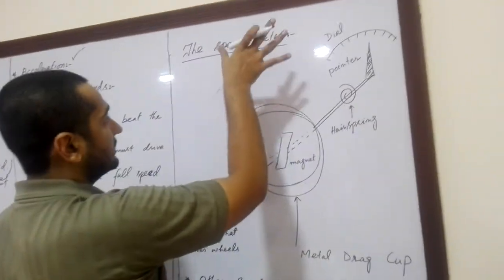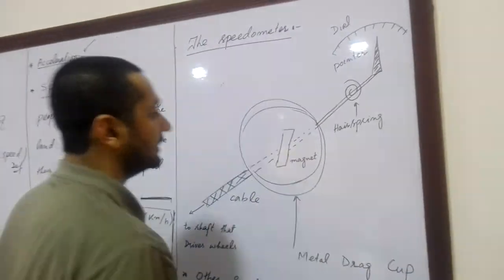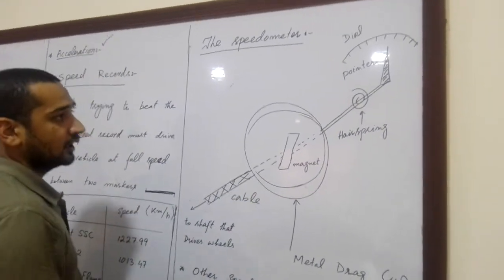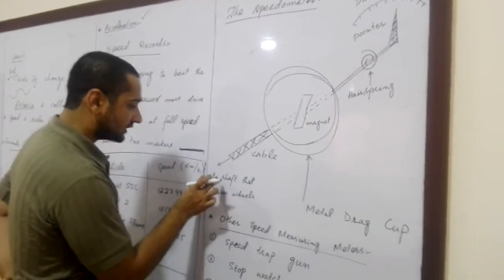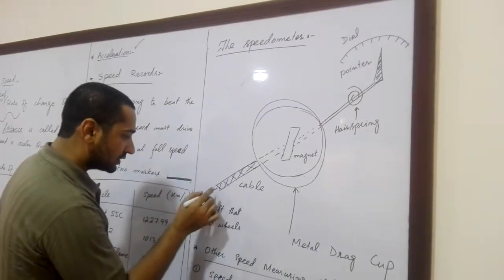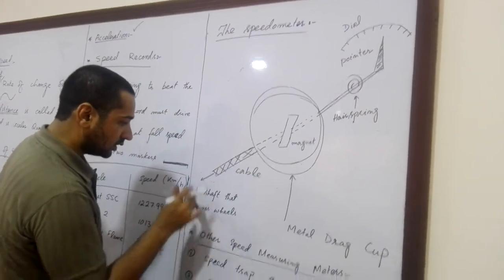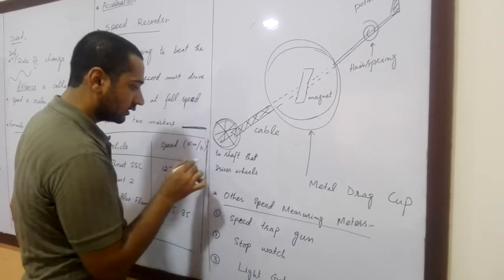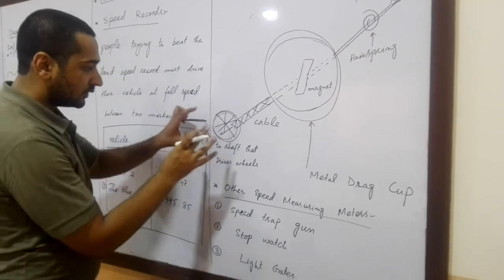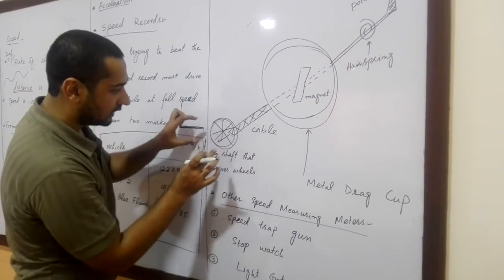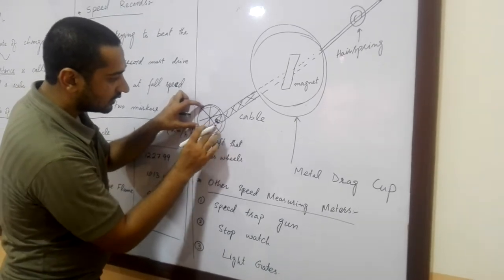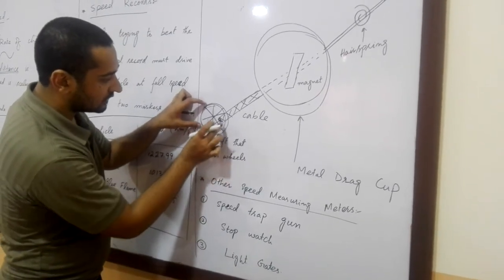Now I am going to discuss the speedometer. Basically the speedometer, in this figure we can say that this is the shaft. Shaft is connected to the drive of vehicle, which is driven by the vehicle. This is the wheel of vehicle. And it is the shaft which is driven by the wheels.